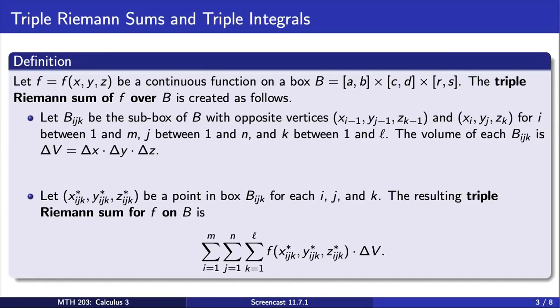We choose a point from each sub-box to plug into f and sum up the product of these values with delta V, which gives us the triple Riemann sum for f on B.